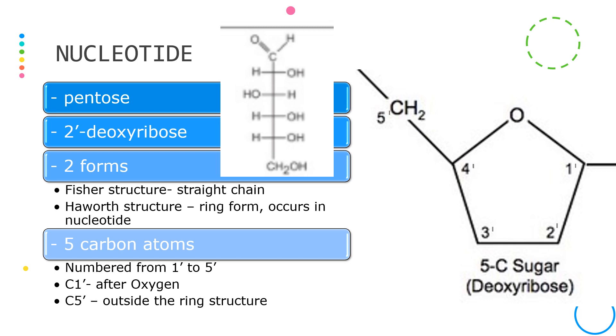1 prime always occurs after the oxygen, and 5 prime is located after or outside the ring form.